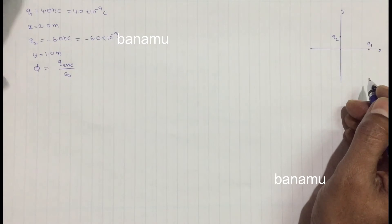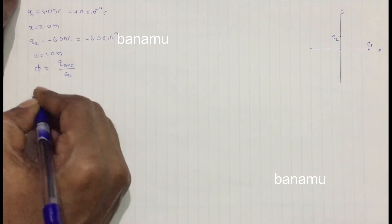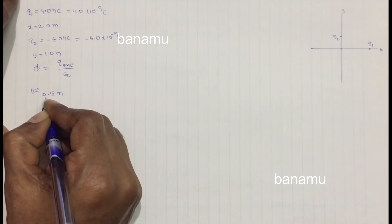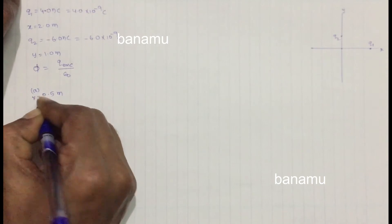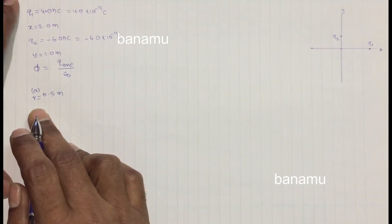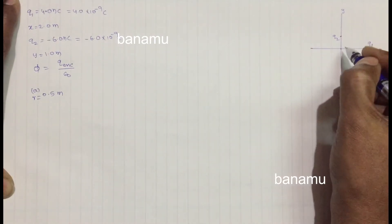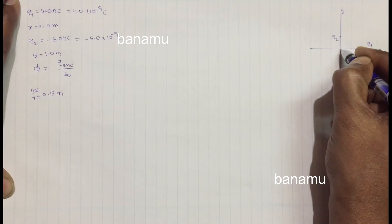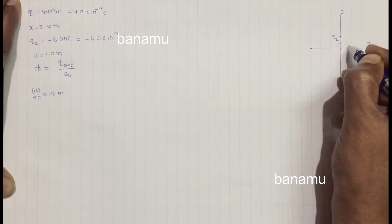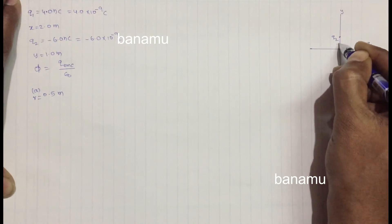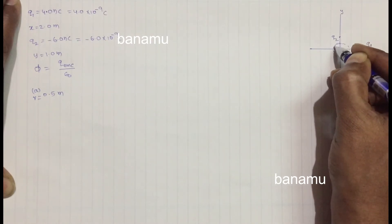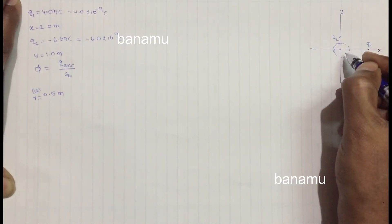For part A, the electric flux through the surface at radius R1 = 0.5 meters. We assume a Gaussian surface of radius 0.5 meters. The radius of this Gaussian surface is 0.5 meters.